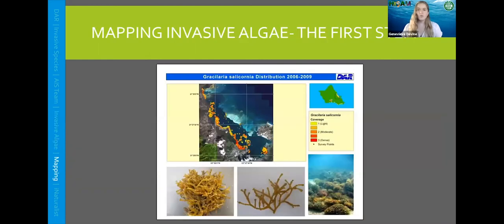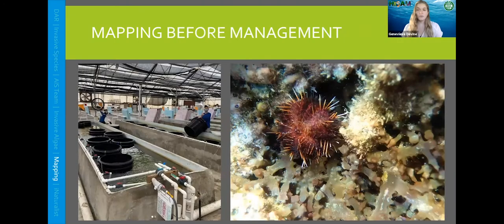Once we know what we're targeting, our first step for managing these algaes is to map the areas. Because we are only a team of six people, mapping and getting density maps is so important in figuring out where to target future management. Here you can see a distribution map of Gracilaria salicornia — the Gorilla Ogo — where the darkest red color indicates the most dense algae. Those are areas where we would focus most of our management attention. And before we can manage anything, we need to know where we are managing — mapping always comes before management.